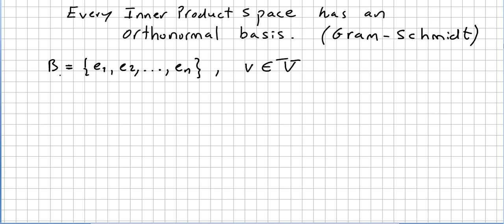This is an orthonormal basis for an inner product space V. So this is an inner product space, and v will be a vector in the vector space. In these conditions, B being an orthonormal basis for an inner product space and v being a vector in the vector space.